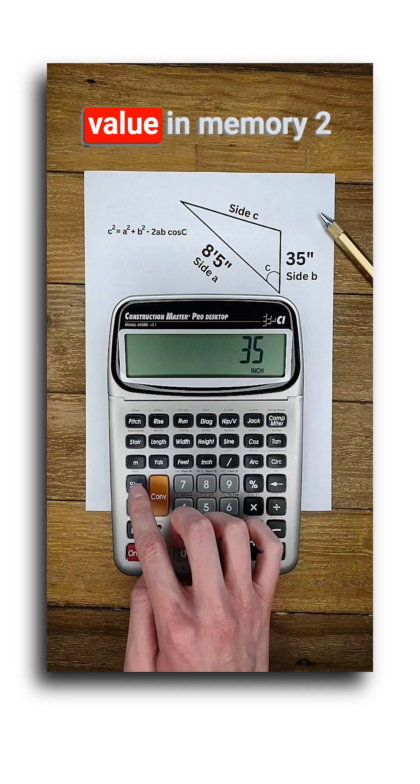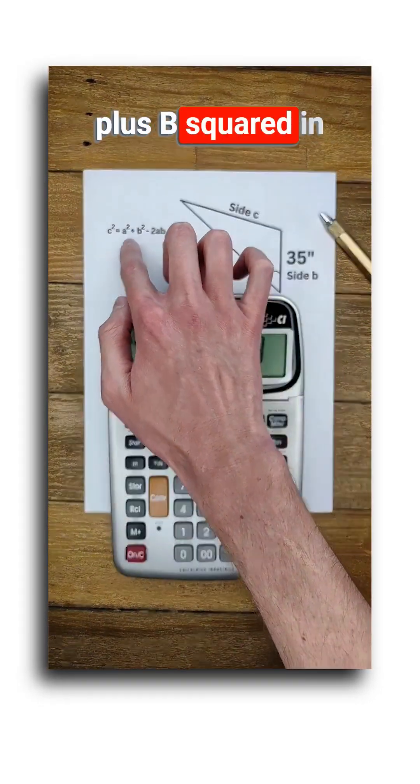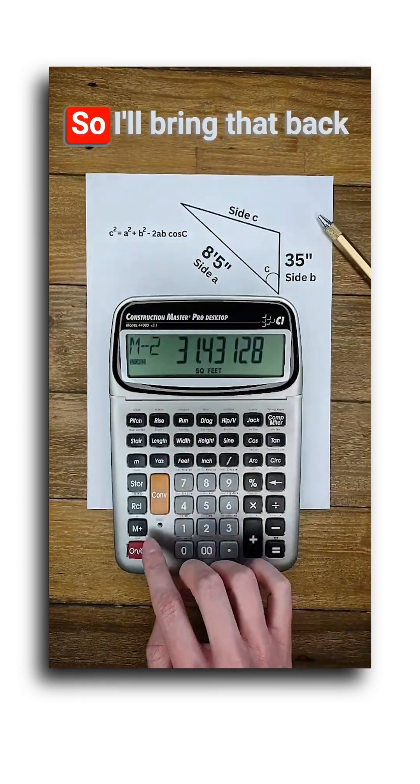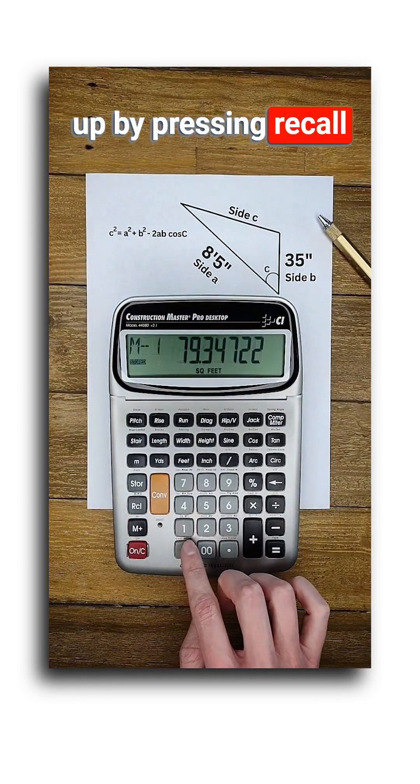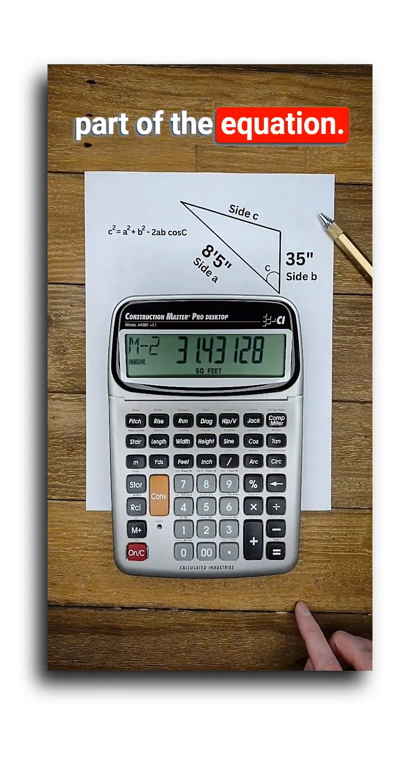Now I'll store that value in memory 2 by pushing store 2. At this point I have A squared plus B squared in memory storage 1, so I'll bring that back up by pressing recall 1 and then subtract recall 2 for the second part of the equation.